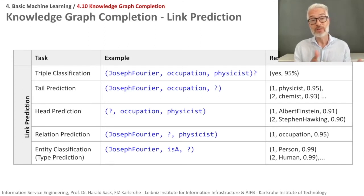There is also head prediction where it's exactly the same game, but you have to predict the head, which means the subject. You have given the predicate property and the object. For example, if you have who has the occupation physicist, then most likely the most probable answer would be Albert Einstein, but of course there are more people who have the occupation physicist.